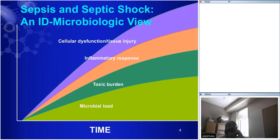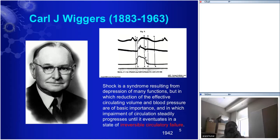What's the problem with this model? Carl J. Wiggers is the foremost cardiovascular physiologist of the 20th century, and he should be most famous for his early definition of shock, in which he said: 'Shock is a syndrome resulting from depression of many functions, but in which reduction of the effective circulating volume and blood pressure is of basic importance, in which impairment of circulation steadily progresses until it eventuates in a state of irreversible circulatory failure.'